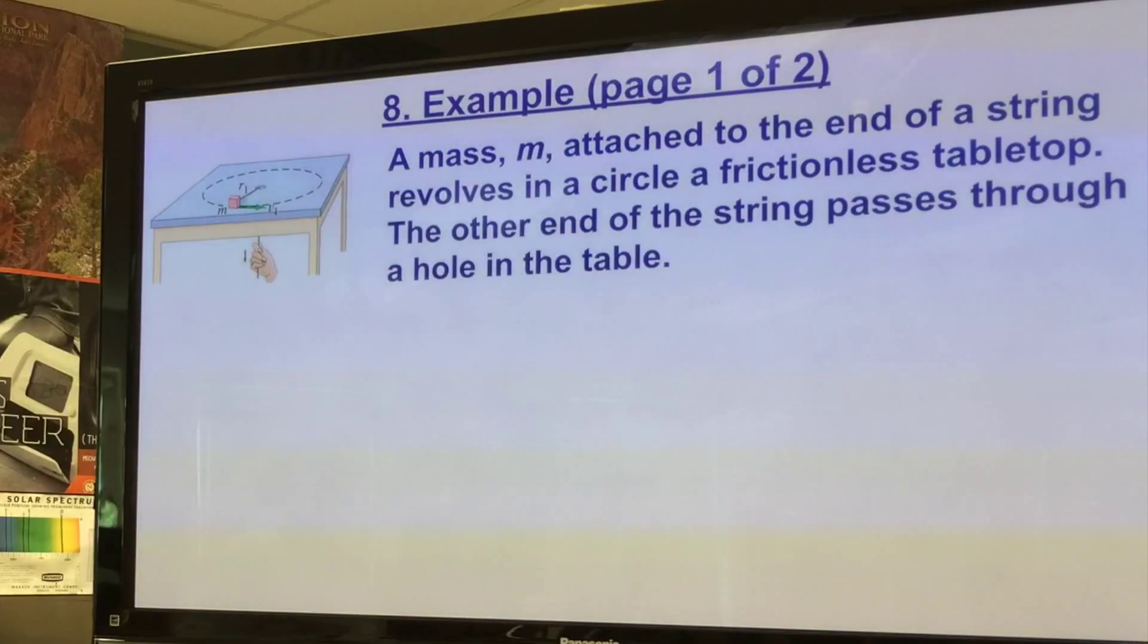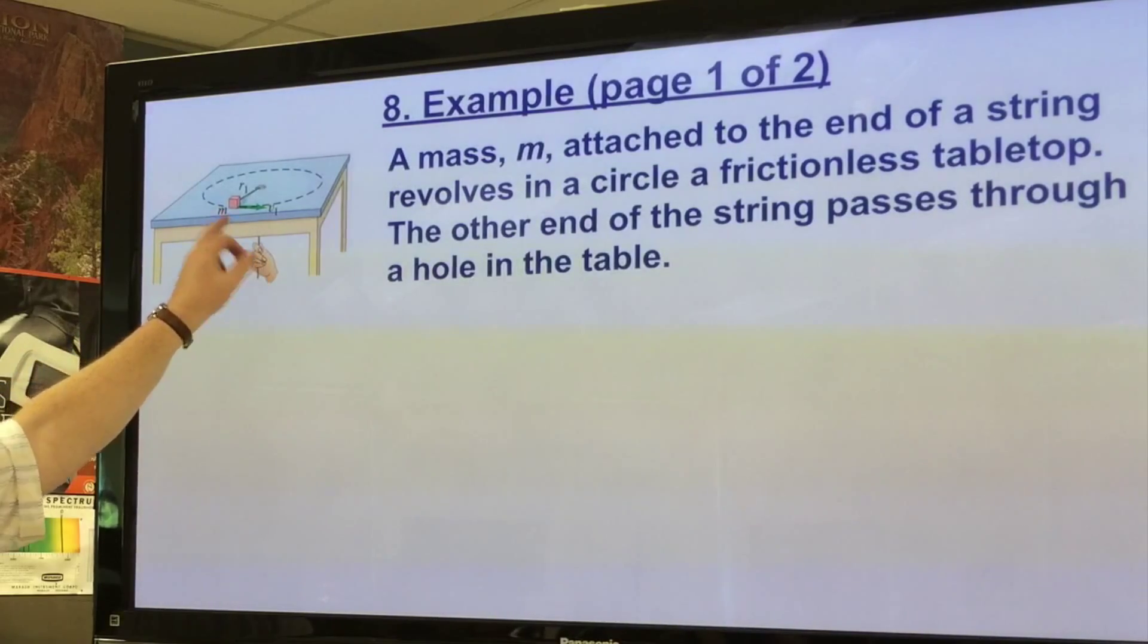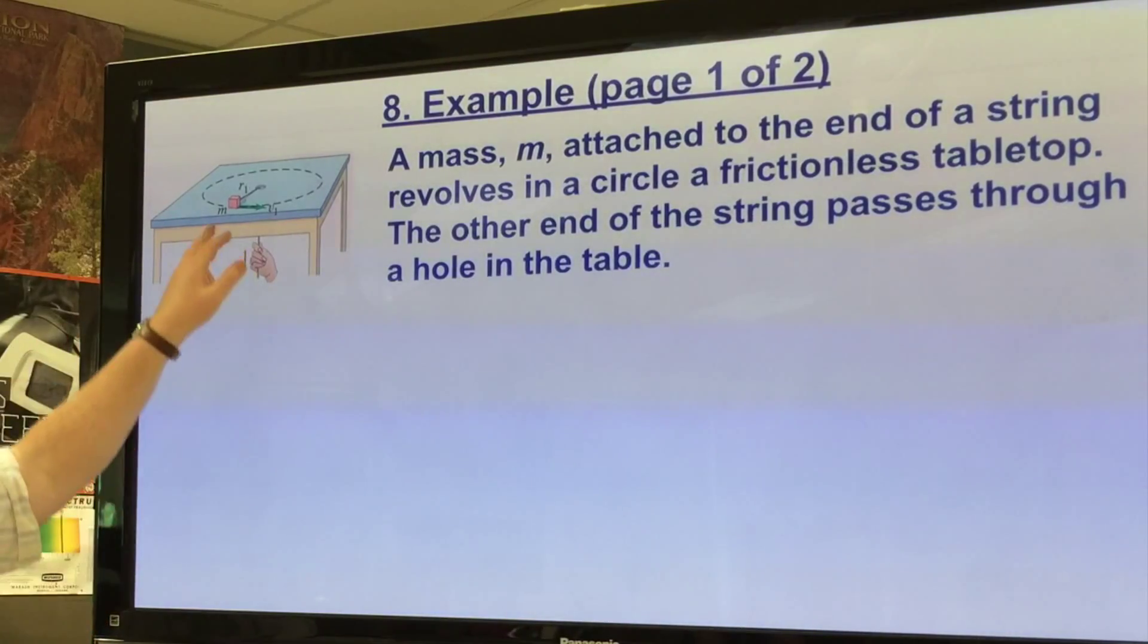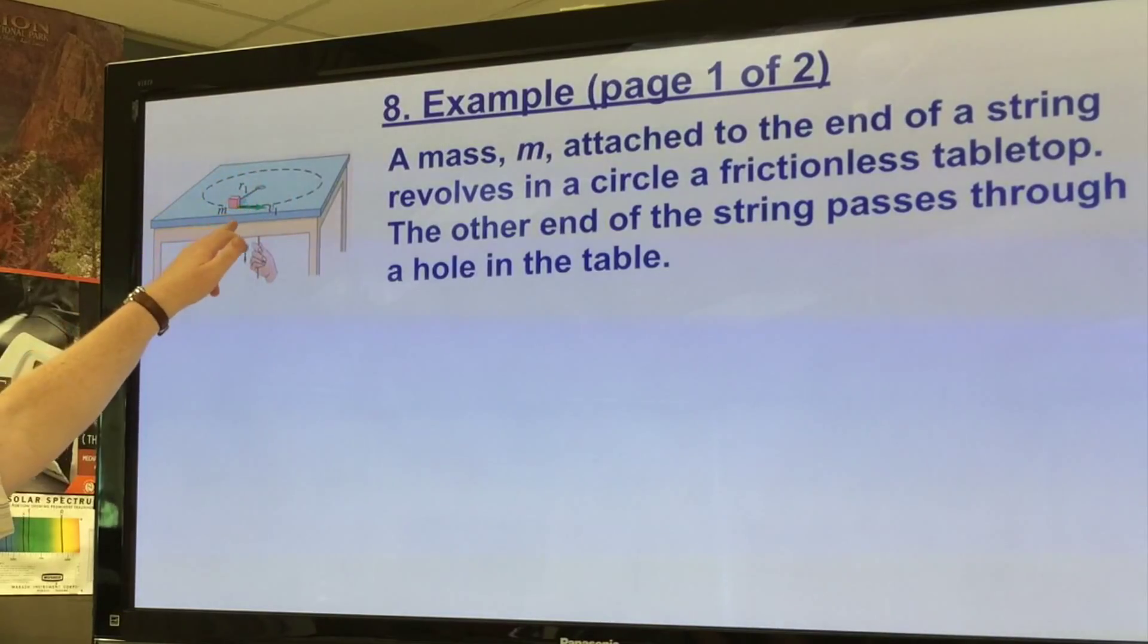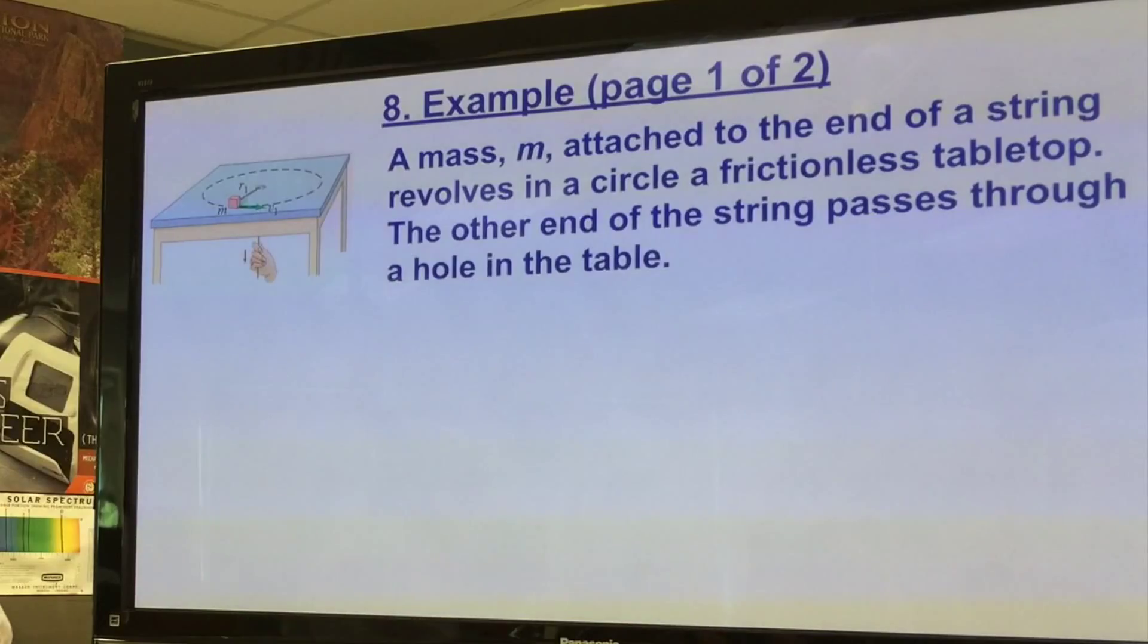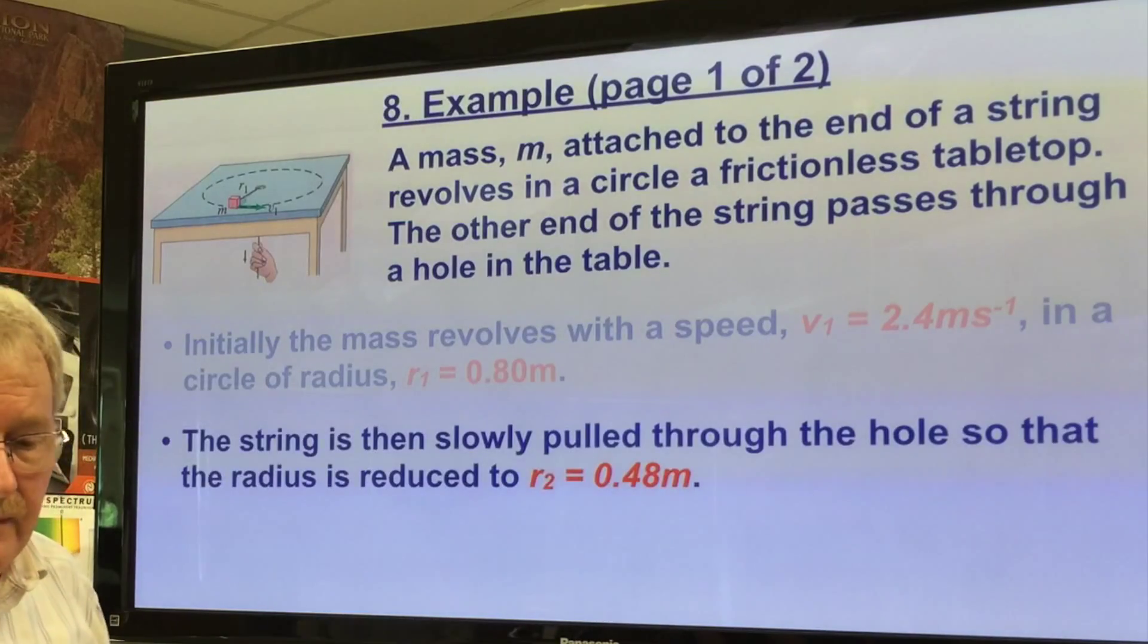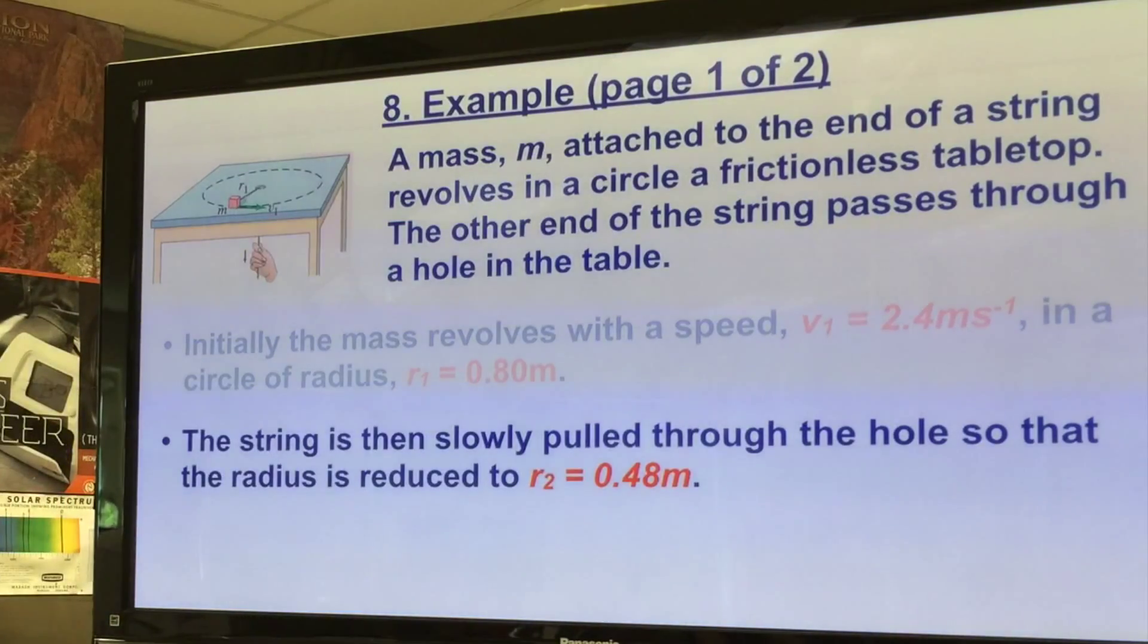Okay so let's have a look at an example. A mass m attached to the end of a string revolves in a circle on a frictionless tabletop. The other end of the string passes through a hole in the table. The reason we put it here is so that we can remove the influence of gravity. You'll remember when we were doing the uniform circular motion that the string was angled down because gravity was acting. In this case we're putting it on a frictionless tabletop so that we can eliminate gravity from the consideration. Initially the mass revolves with the speed v1 at 2.4 meters per second - so that would be the tangential velocity - in a circle of radius 0.8 meters.